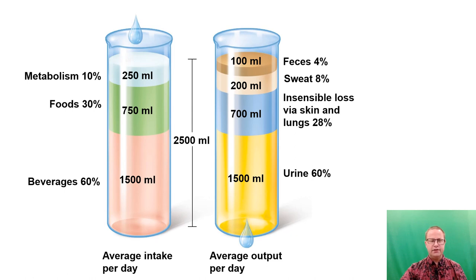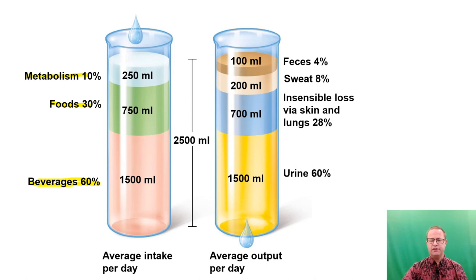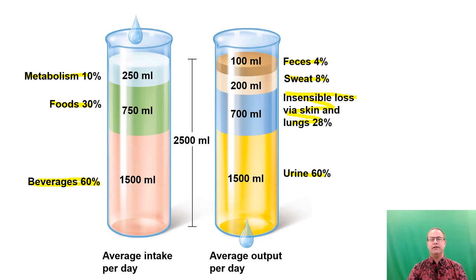Water intake: beverages comprise about 60% or 1.5 liters, foods about 30% or 750 milliliters, and metabolism generates about 10% or 250 milliliters. On the output side, the majority is lost through urine — about 60% or 1.5 liters. About 8% is lost in sweat, and about 28% is lost as insensible water loss through water vapor in breathing. Only about 4% is lost through feces, unless you have diarrhea, which can rapidly cause life-threatening dehydration.